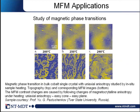It is also interesting to perform MFM at different temperatures to investigate magnetic phase transitions. Here you see MFM images made on bulk cobalt single crystal at different temperatures. The topography shows no changes with temperature, but the changes in MFM images are dramatic. By analyzing these images one can conclude that the magnetic crystalline anisotropy is changing as the sample is heated — from uniaxial to easy-cone or easy-plane anisotropy — and you can detect this using MFM.